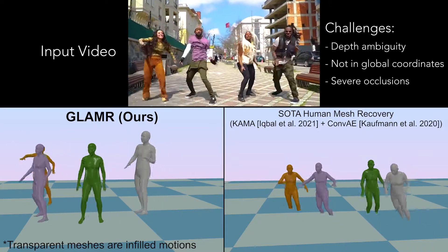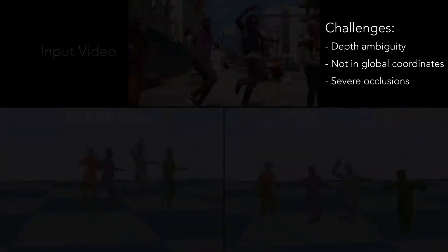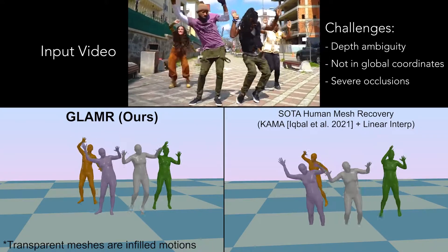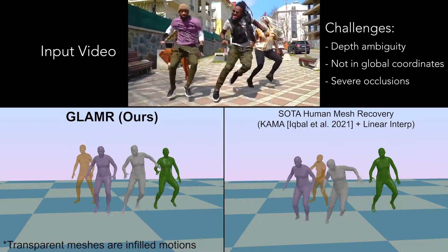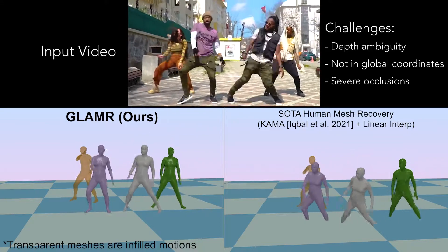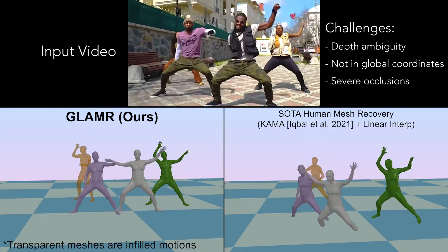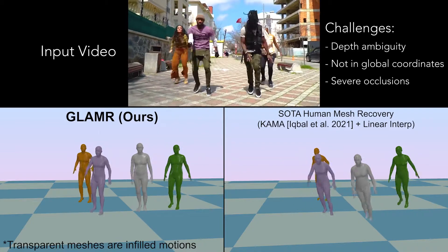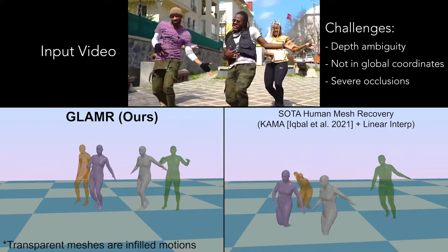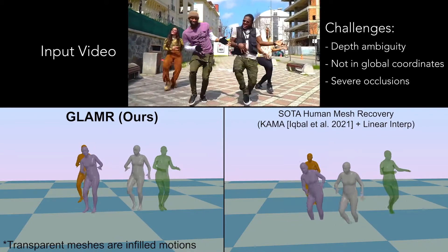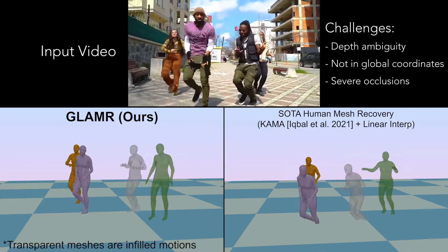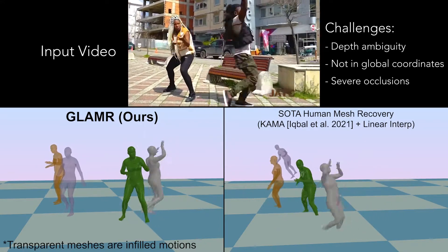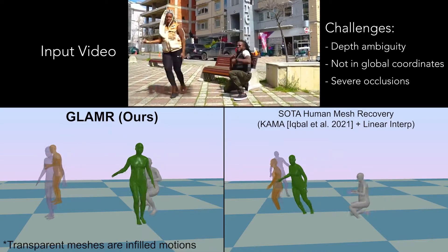Second, existing methods only estimate pose in the camera coordinates. Therefore, with dynamic cameras, the human motion is not registered inside a consistent global coordinate system. Third, severe occlusions often exist in videos from dynamic cameras where people are completely occluded for a long time. Here, transparent human meshes represent infilled motions for occluded humans.